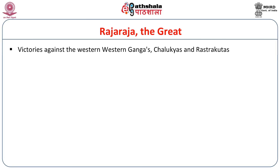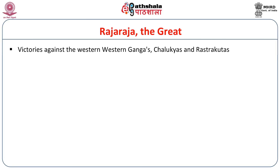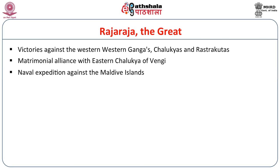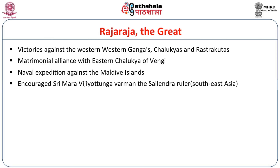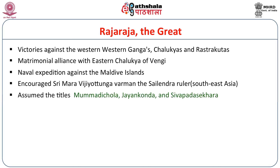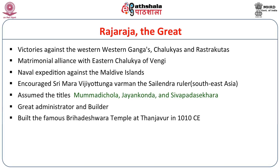He also scored victories against the Western Gangas, Chalukyas, and Rashtrakutas, and maintained a matrimonial alliance with the Eastern Chalukyas of Vengi. He also conducted a naval expedition against the Maldives islands, and as a result, the Maldives also formed a part of the Chola empire. He encouraged Sri Mara Vijayatungavarman, the Shailendra ruler of Southeast Asia. He assumed the titles Mummadi Chola, Jayakonda, and Shivapada Shekhara. As a builder, he built the famous Brihadishwara temple at Tanjabur in 1010 CE. He was a devout follower of Shaivism and also patronized a Buddhist monastery at Nagapatnam.